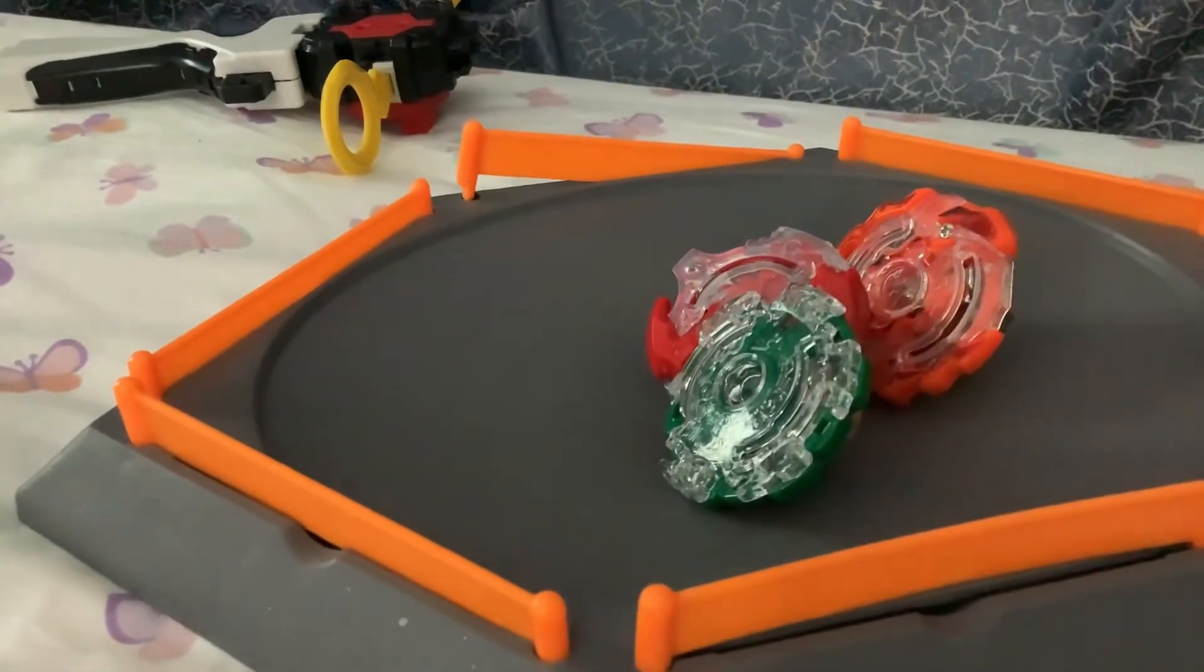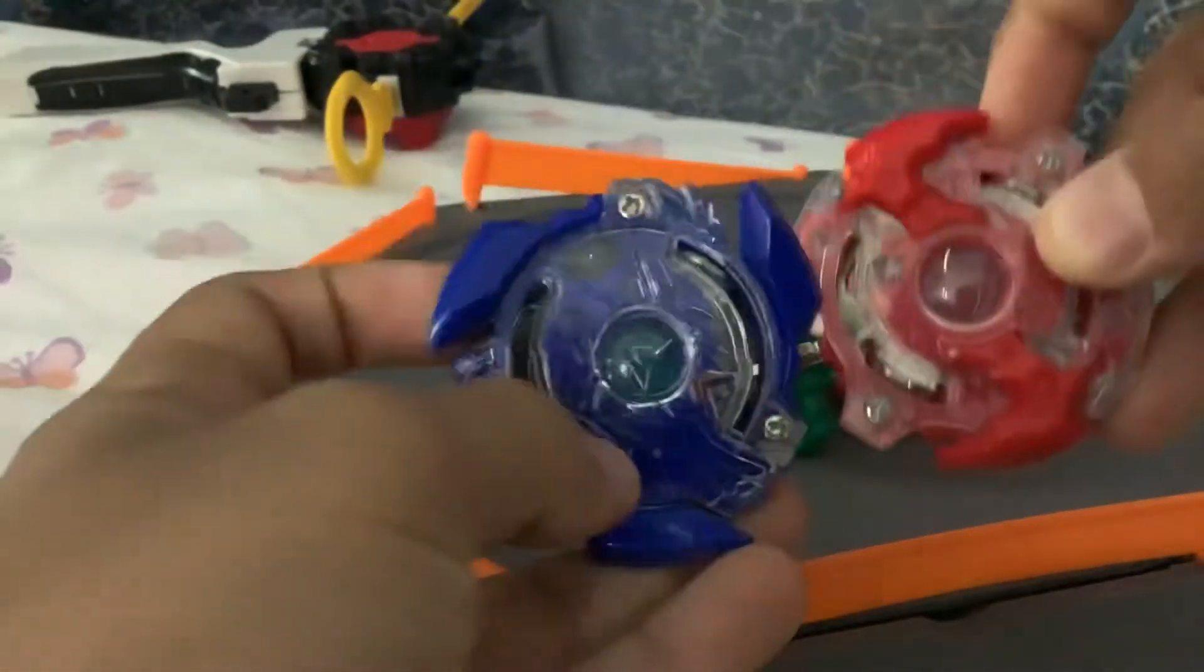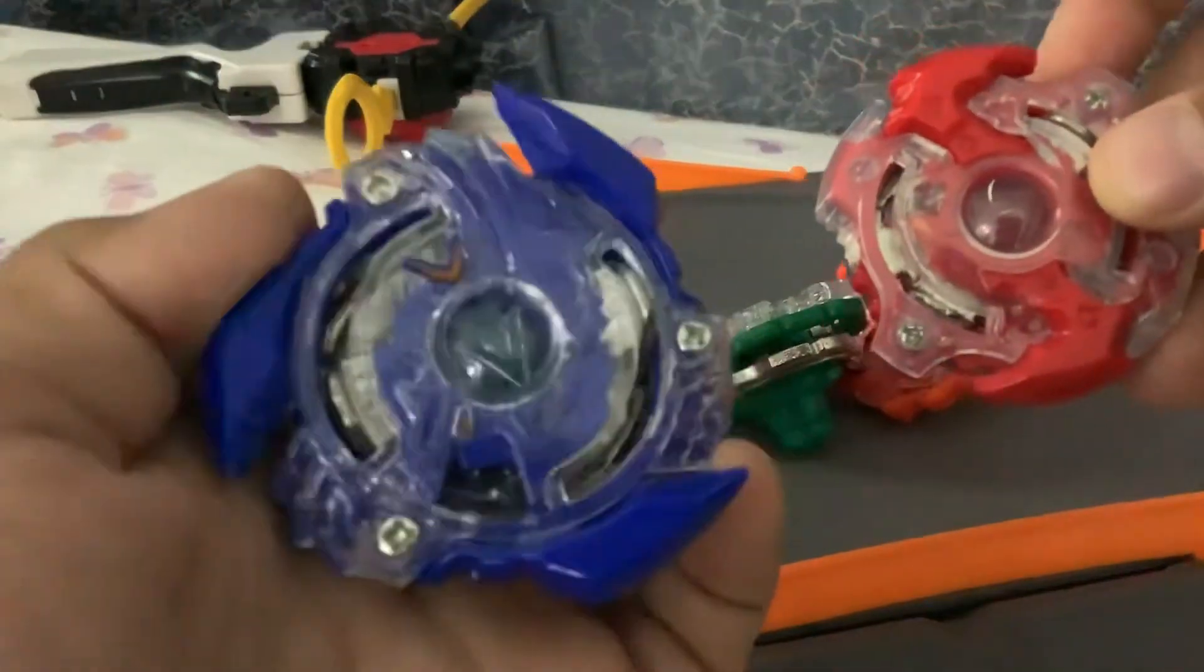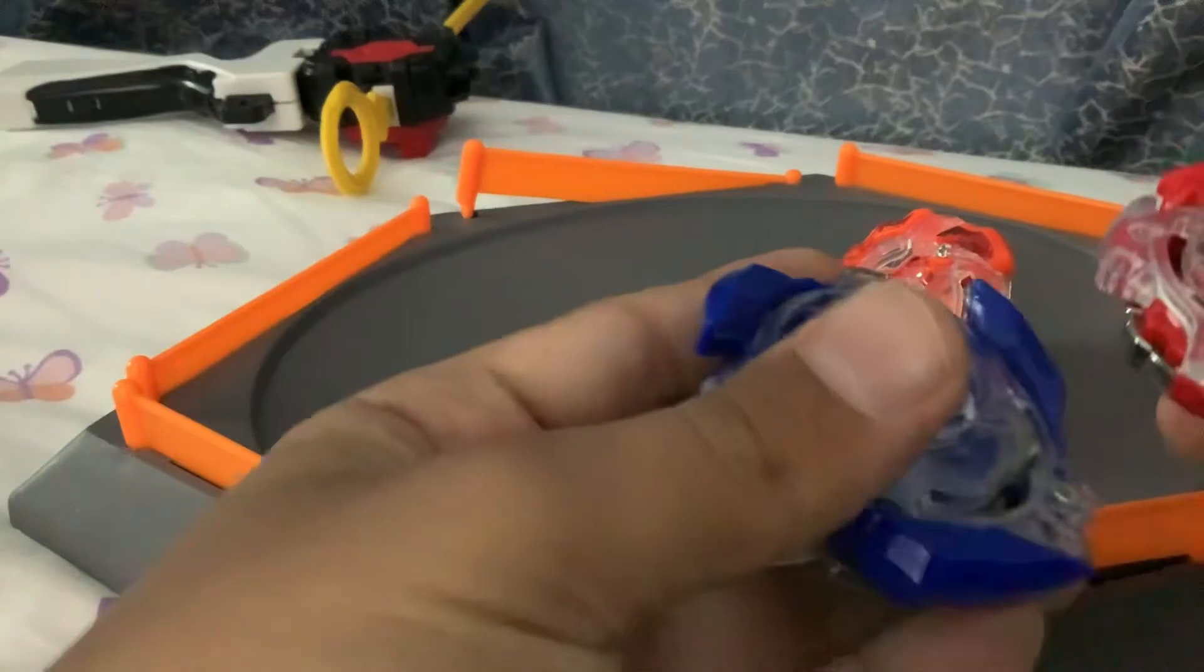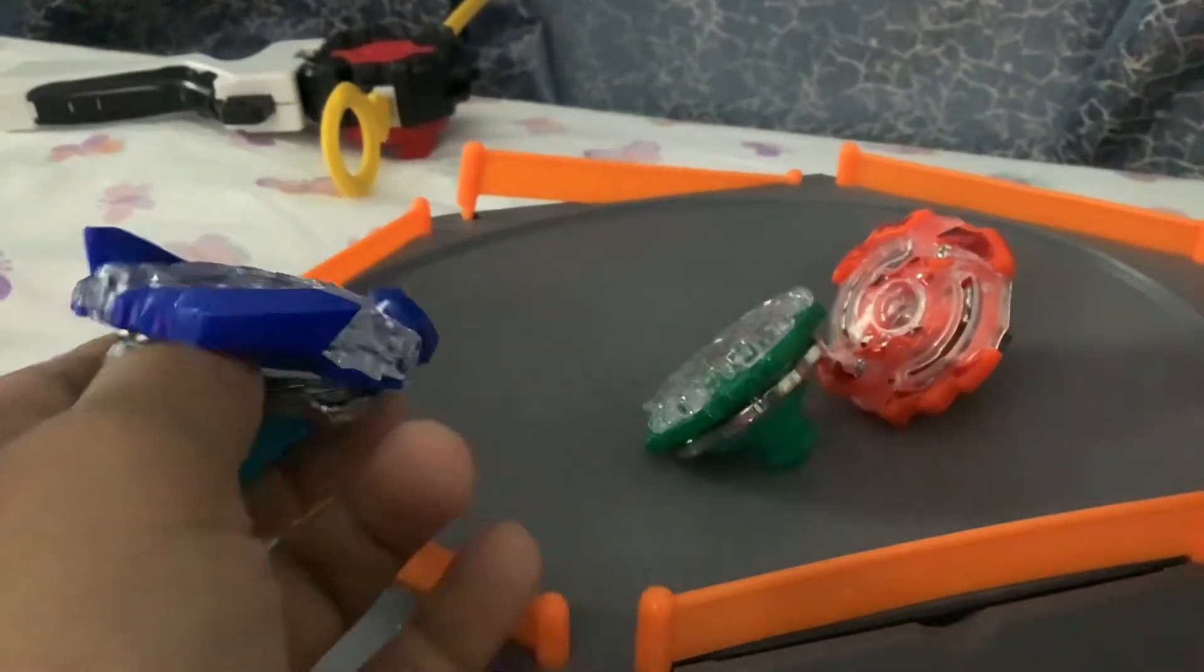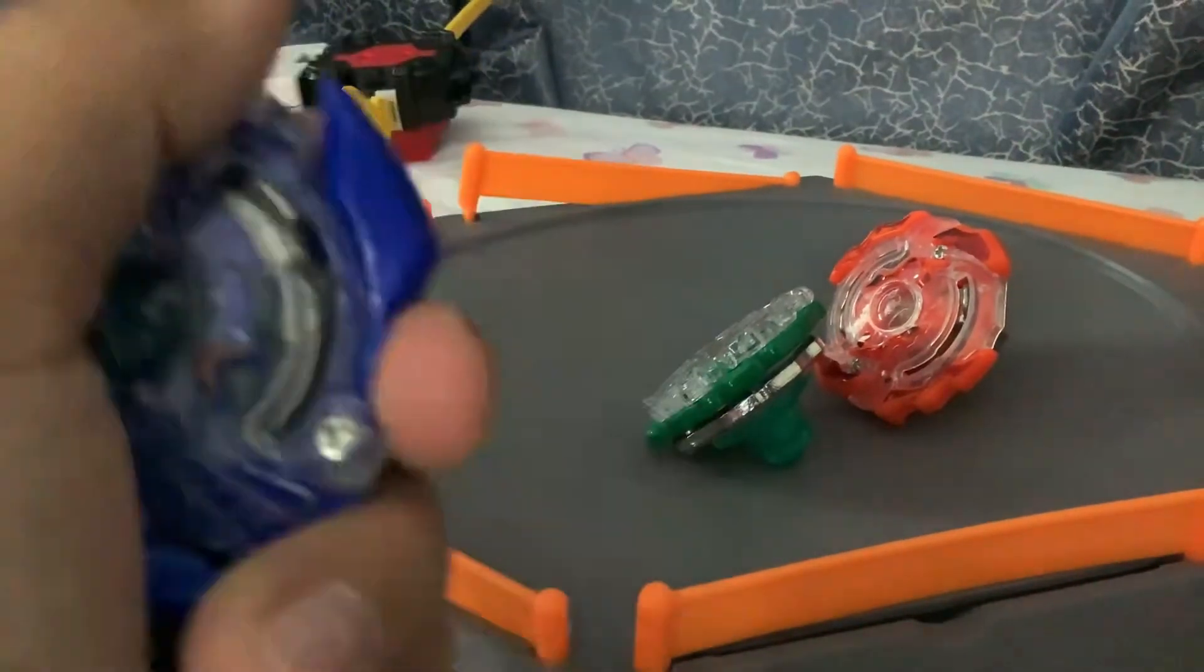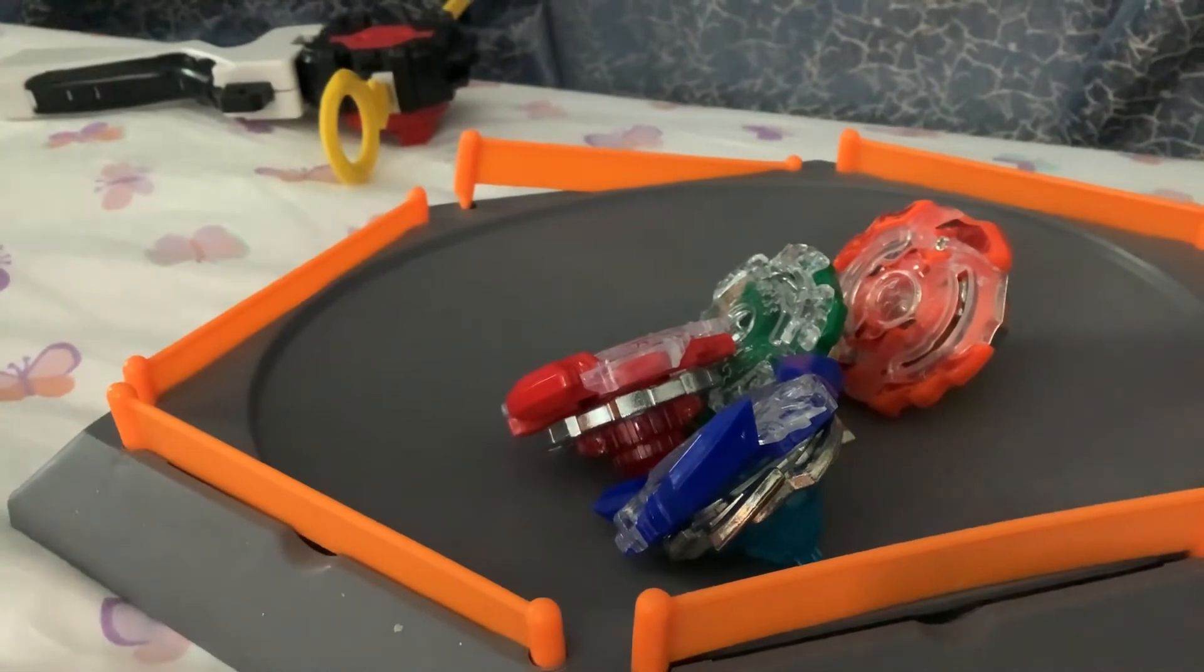But so far, these burst all. Out of all of them, the two best is Spryzen and Valkyrie. You see Valkyrie has some cracks on him, a little bit of them. But then Spryzen is new. But Valkyrie has not much burst resistance, but he has a lot of attack.